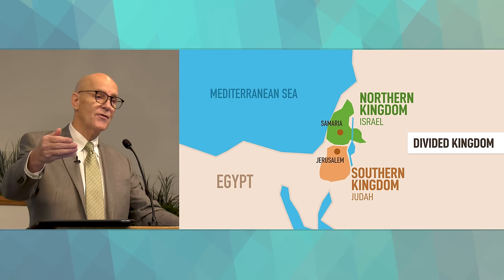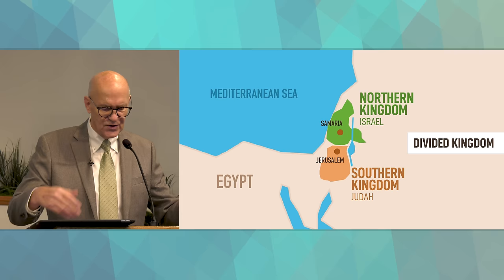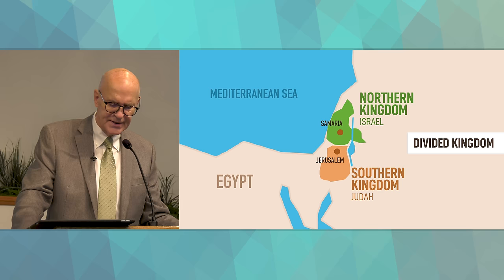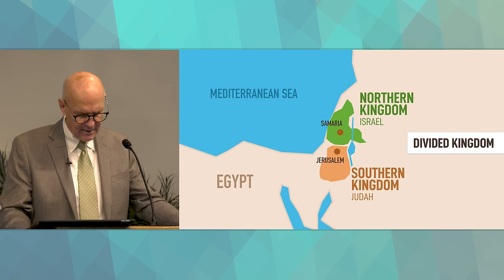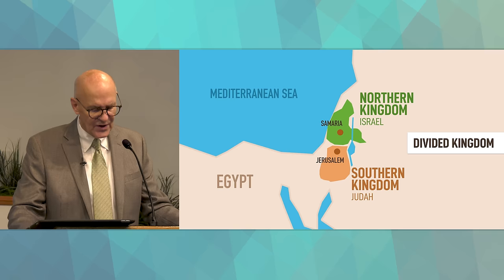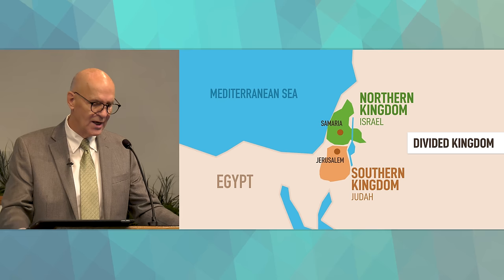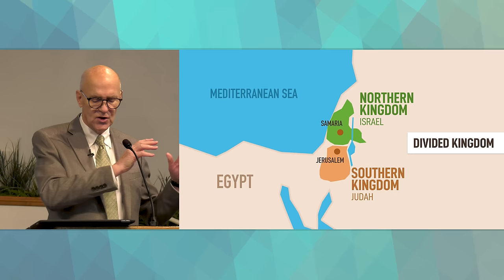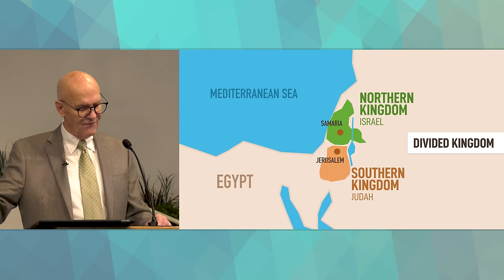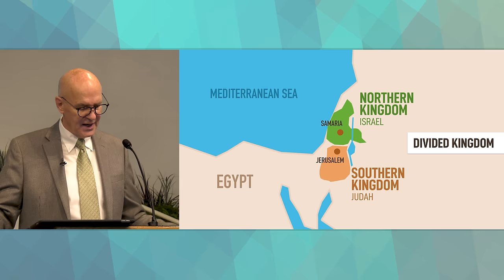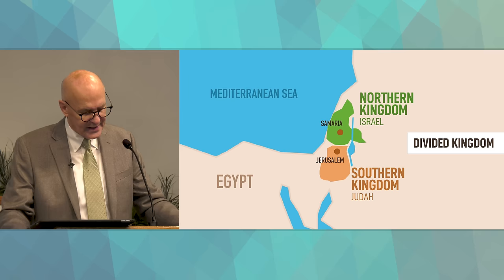The northern kingdom of Israel was led by one of Solomon's former officials, Jeroboam, who ruled from its first capital city Shechem. The northern kingdom also had Tirzah as capital, and finally Samaria remained its capital until the kingdom was defeated in 721 BC by the Assyrians. From Solomon's death in 931 BC to the destruction of the southern kingdom in 587 BC, the divided kingdom lasted approximately 350 years, with each kingdom having 20 kings.